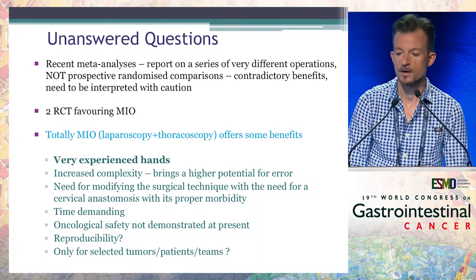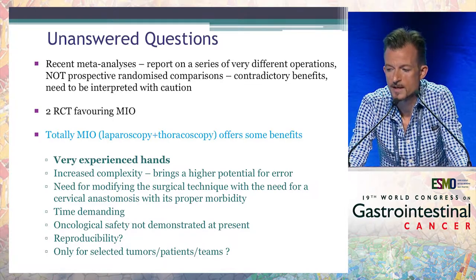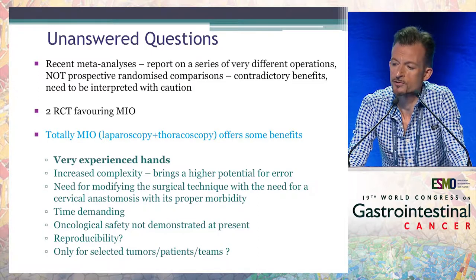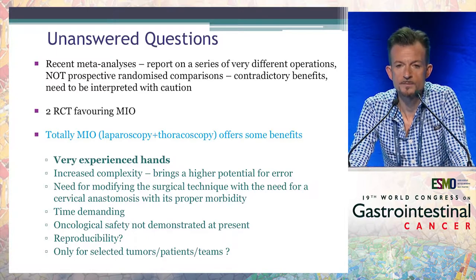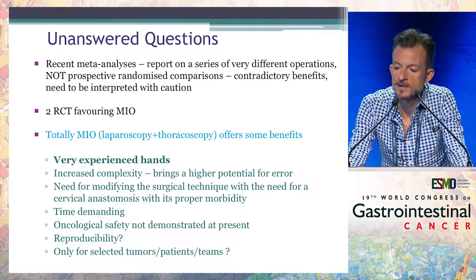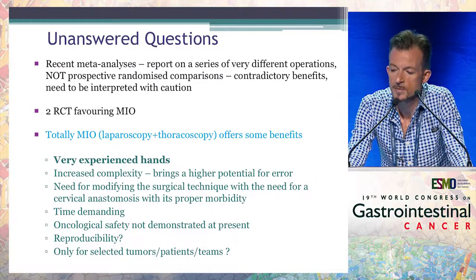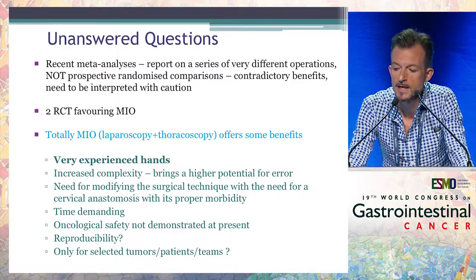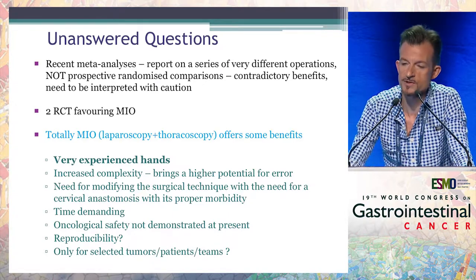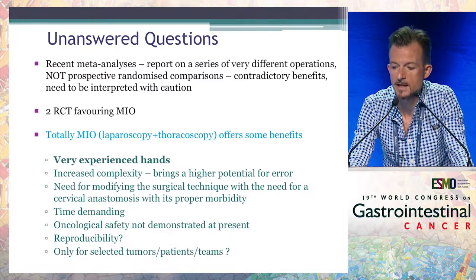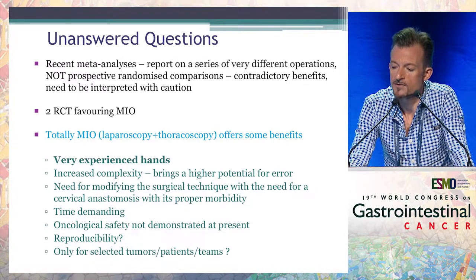Just to conclude before taking messages: we have some unanswered questions. Recent meta-analyses based on retrospective small case series of very different operations show some contradictory benefits and must be interpreted with caution. We have two randomized trials favoring the minimally invasive approach. The Lancet trial shows that the total minimally invasive approach — combining laparoscopy and thoracoscopy — offers some benefits, but only in very experienced hands, with increased complexity bringing higher potential for error, often requiring a cervical anastomosis with specific morbidity, time demands, and undemonstrated oncological safety. Reproducibility remains a concern, and it may only be suitable for selected tumor patients and teams.